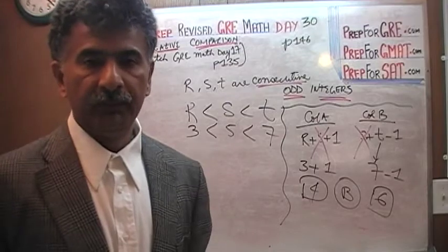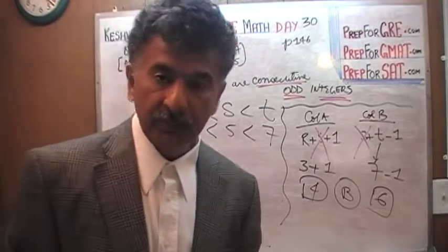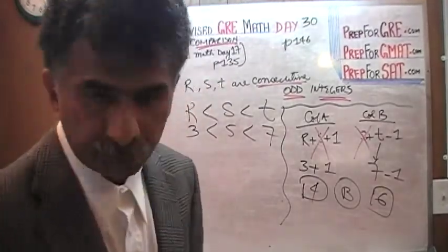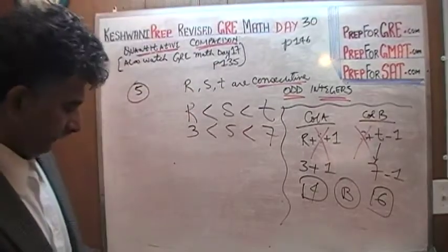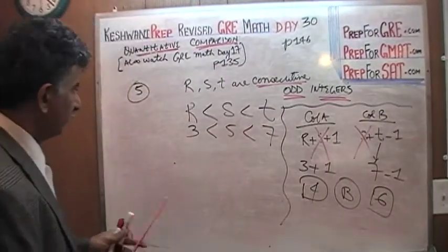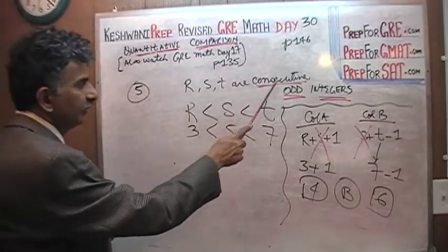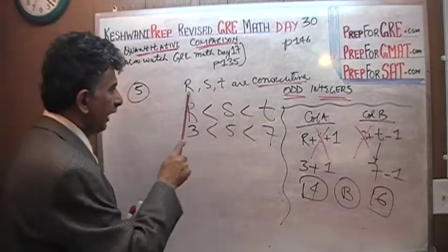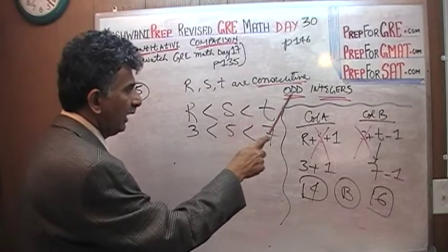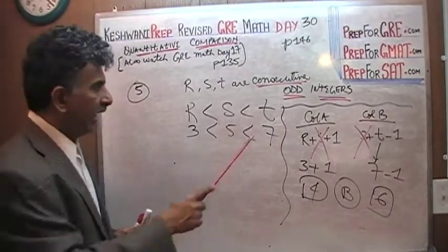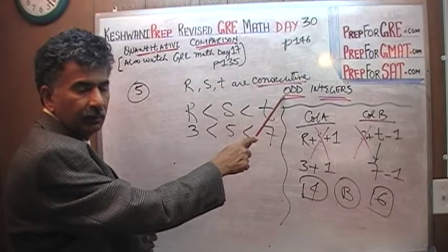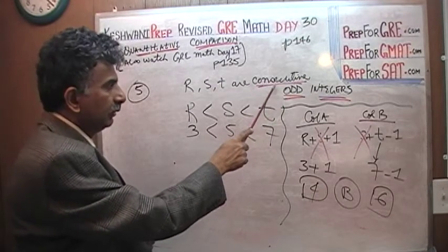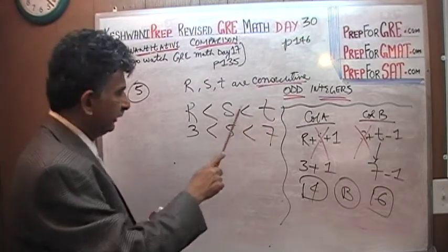Do you know why? If somebody were to ask you why, will you be able to articulate why? Here's the reason. Pay attention. Here's the reason. You see, because they are consecutive odd integers, because they are consecutive odd integers, listen carefully, because R, S, and T are consecutive odd integers, well, the odd part is not important here, even if they were even, what I'm about to say would apply.